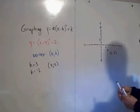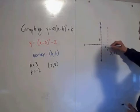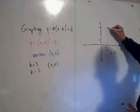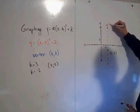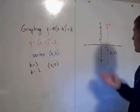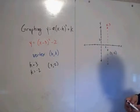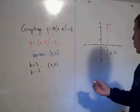Which means our axis of symmetry is the vertical line that goes through the vertex, which is the line x equals 3. And at this point, pick an x value that's close to the x value of your vertex, and let's just pick 1.